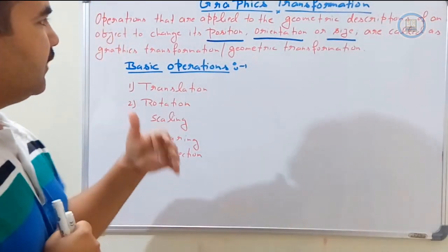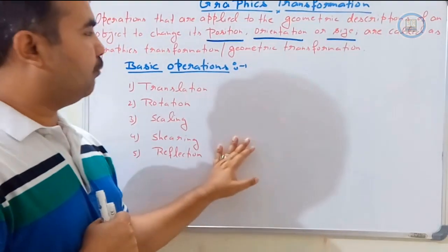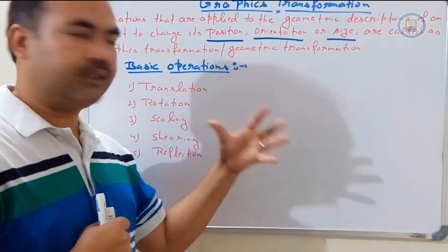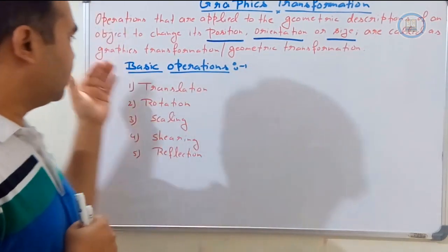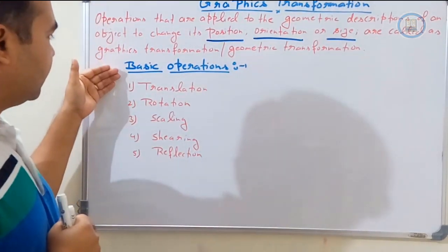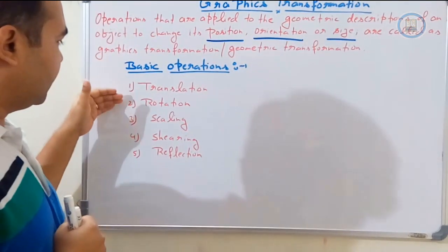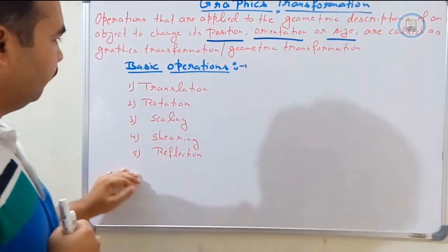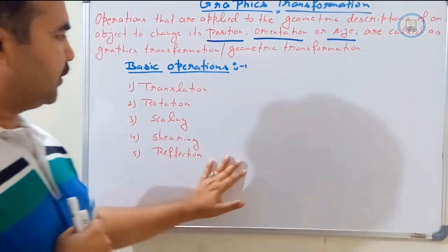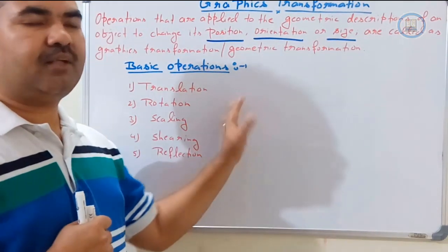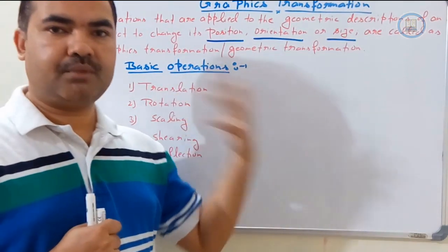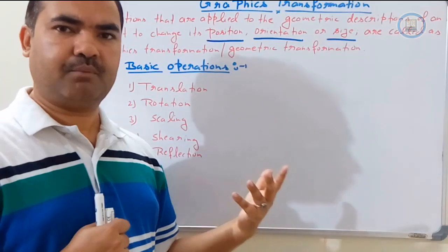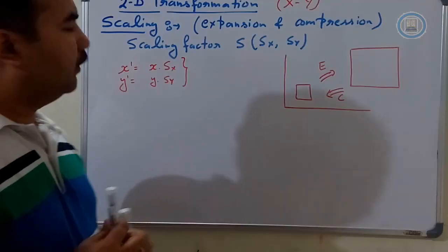The next thing is: what are the basic operations we can apply on any object? That is, translation, rotation, scaling, shearing, and reflection. These are the basic operations we can apply on a two-dimensional object and also on a three-dimensional object.